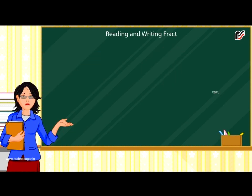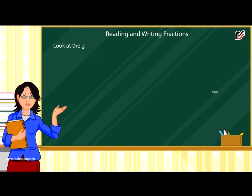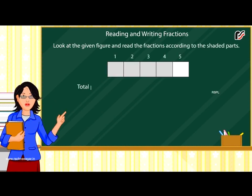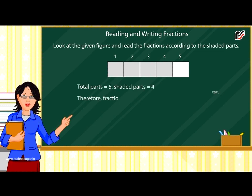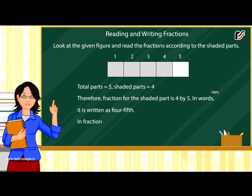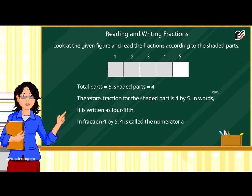Reading and writing fractions: look at the given figure and read the fractions according to the shaded parts. Total parts is equal to five, shaded parts is equal to four. Therefore, the fraction for the shaded part is four by five. In words, it is written as four fifth. In the fraction four by five, four is called the numerator and five is called the denominator.